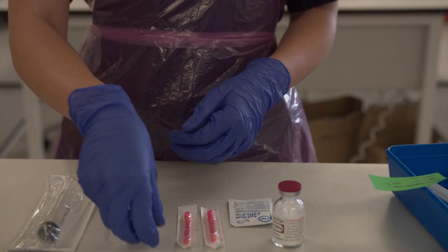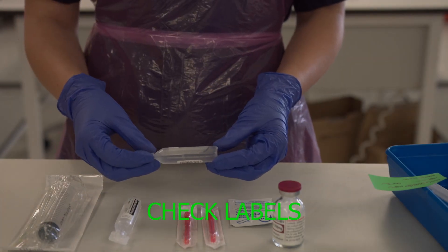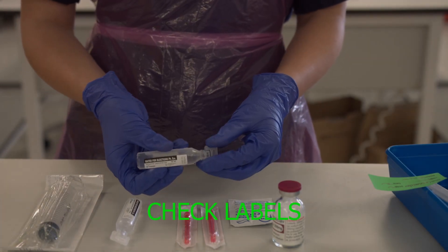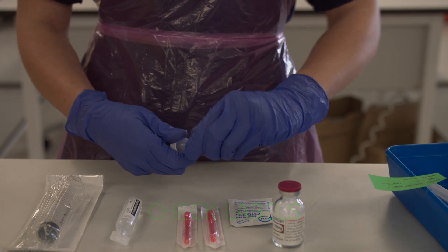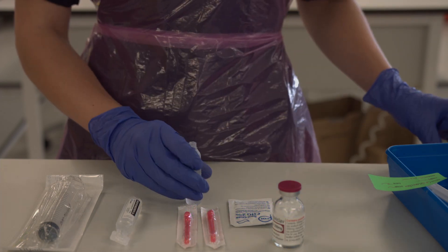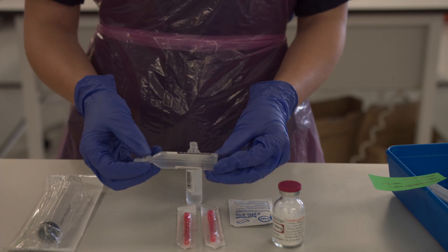Start by checking the labels on your bottles of solution to make sure that they are in date and that they are what you expect they will be, which should be water for injection for this part of the station. You can then twist off the caps and put these to the side out of the way.